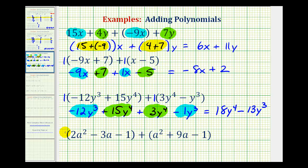And then for the last example, we'll go ahead and put 1s here and distribute, but we know when it's addition, distributing a positive 1 is not going to change the sign of anything. This will be different when we deal with subtraction. So we'll have 2a squared minus 3a minus 1 plus a squared plus 9a and then minus 1. So here we have two a squared terms. Here we have two a terms.